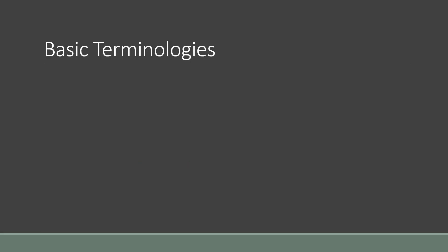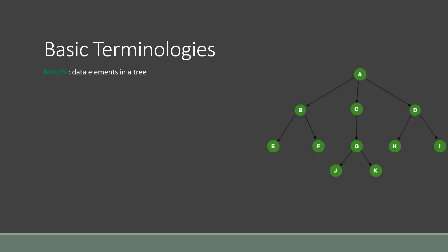Let's look at some basic terminologies in trees using a sample tree. All the data elements in the tree are called nodes. So A, B, C, D, E, F, G, H, I, J, and K are all the nodes of the tree.